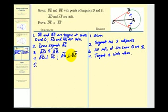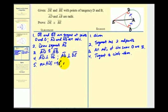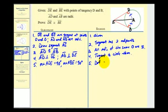Since these are perpendicular, we know the measure of angle ADE equals 90 degrees, and so does the measure of angle ABE. This is by the definition of perpendicular lines.